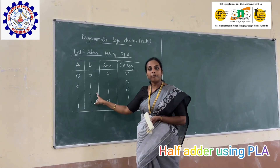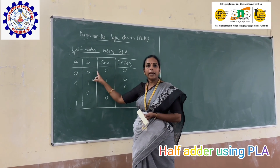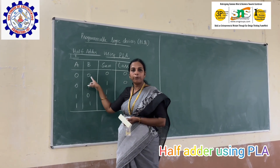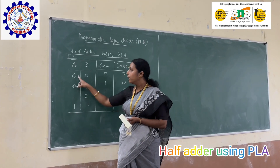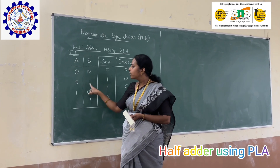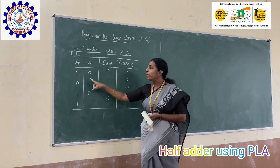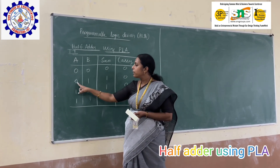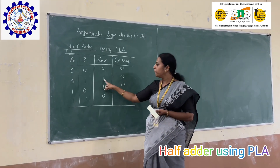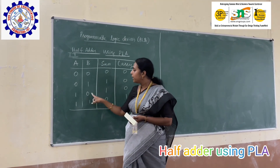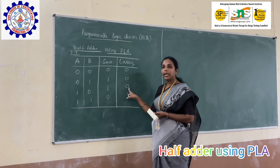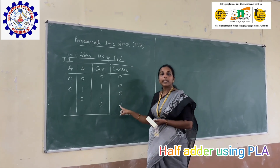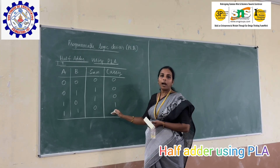For the half adder circuit, we have two inputs A and B, and two outputs: sum and carry. Since there are two inputs, we have four combinations from 0 to 3, with binary values 00, 01, 10, and 11. When we add: 0+0, sum=0 and carry=0; 0+1, sum=1 and carry=0; 1+0, sum=1 and carry=0; and 1+1, sum=0 and carry=1. This is the truth table for a half adder circuit.